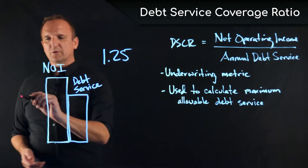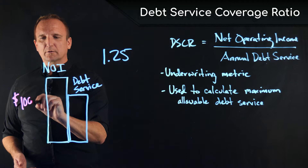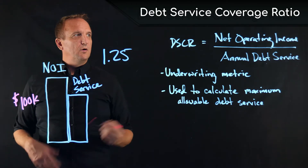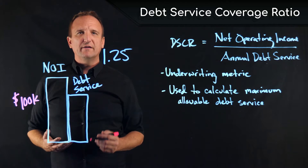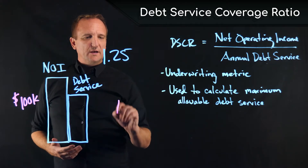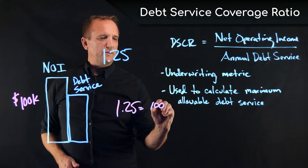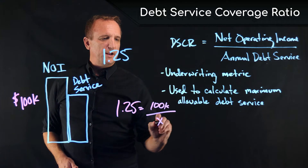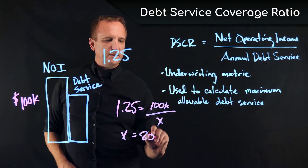Let's take a look at an example. Imagine a property has $100,000 of net operating income. Using our formula, if 1.25 is our minimum ratio, that means 1.25 equals $100,000 divided by x, which makes x equal to $80,000.